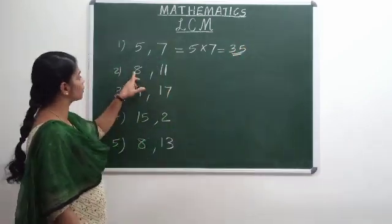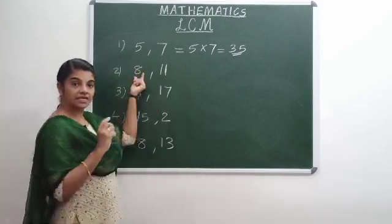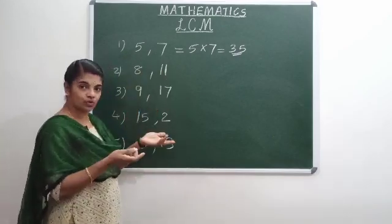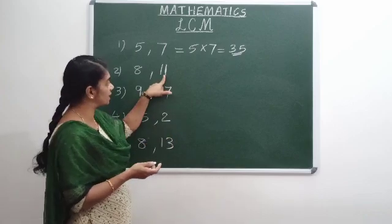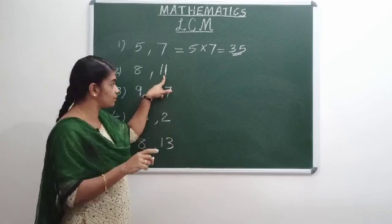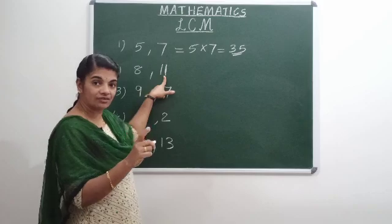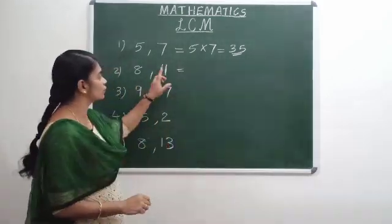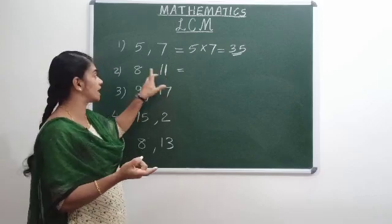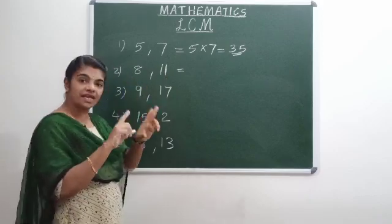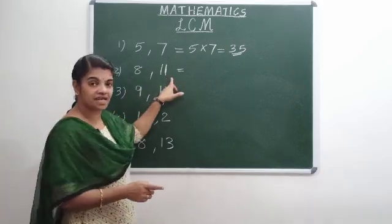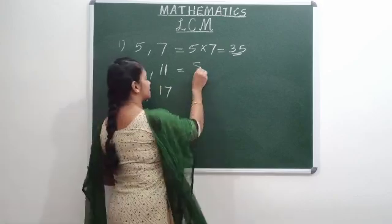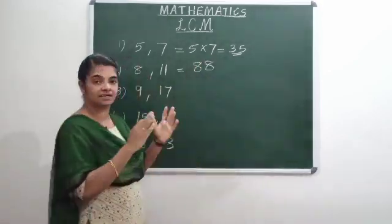Here we have numbers 8 and 11. What number is a composite number? The factors are given. What number is 11? It is a prime number. What number is a composite number? You can multiply these two numbers. That is the LCM. 11 into 8 is 88. We don't need to do further division.